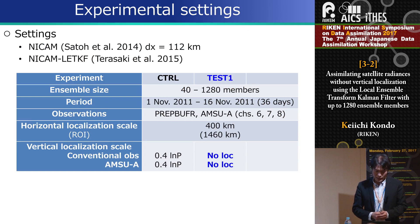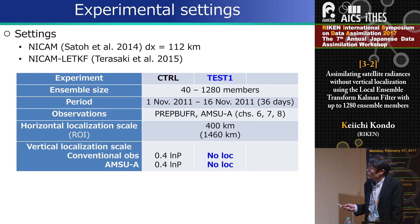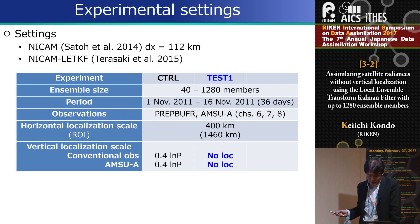I performed two experiments: a control experiment and a test experiment. The model is NICAM at a resolution of about 100 kilometers, and ensemble size is up to 1,280. The test experiment removes all vertical localization for both conventional observations and AMSU-A observations.